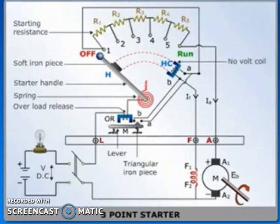Now, case one: the motor is in the OFF position. At that time, the starter handle H is kept in the OFF position by a strong spiral spring. This indicates that the motor is disconnected from the supply.